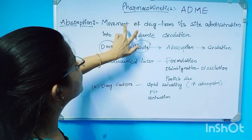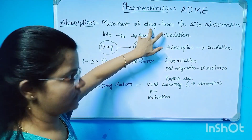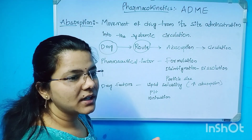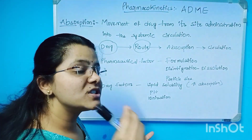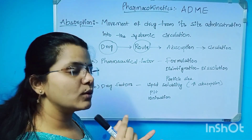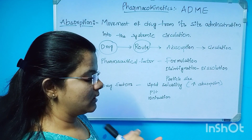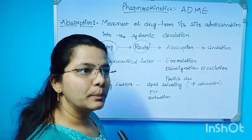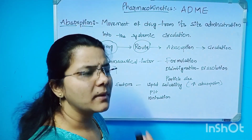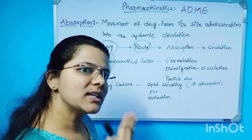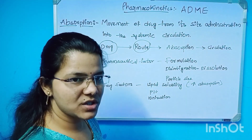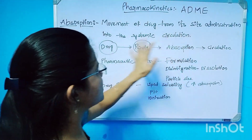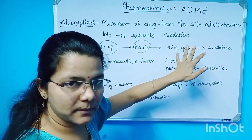The movement of drug from its site of administration — the site of administration means where the drug is put. It can be administered orally, rectally, or by parenteral route. Through these routes, the drug moves from the site of administration into systemic circulation.